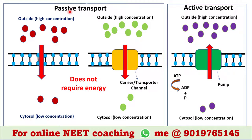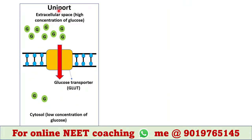Passive transport of any molecule occurs when it crosses the biological membrane from higher concentration to lower concentration — that means down the concentration gradient — and it does not require any energy. Active transport occurs when a molecule crosses the biological membrane from lower concentration to higher concentration, that means against the concentration gradient, and hence it requires energy from ATP.